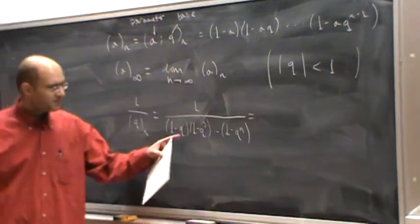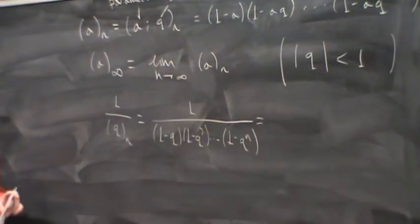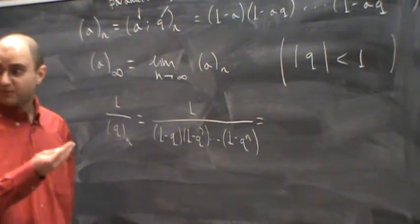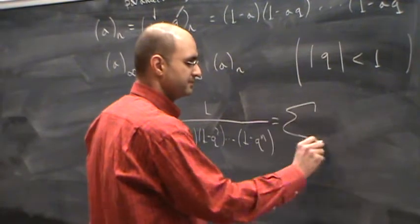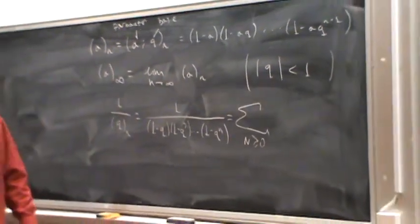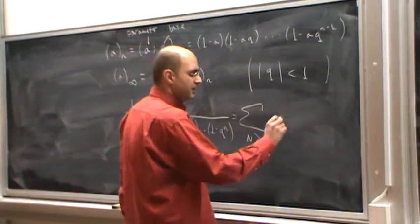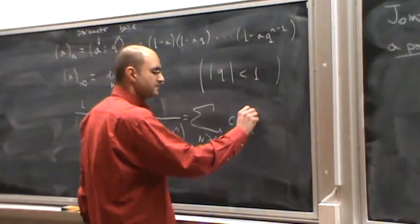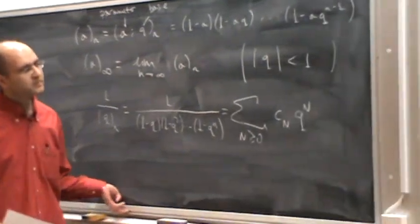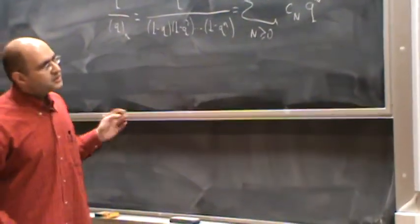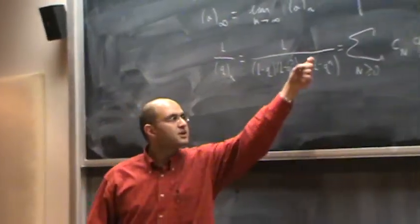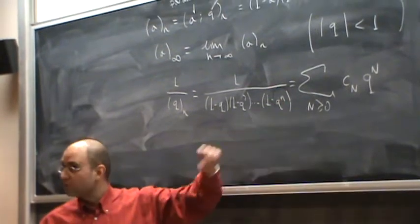Thanks to geometric series, you can expand all factors in the denominator, and collect like terms, collect like exponents of q, and you will have a series. Sum say capital N greater than 0, c sub n, q to n.